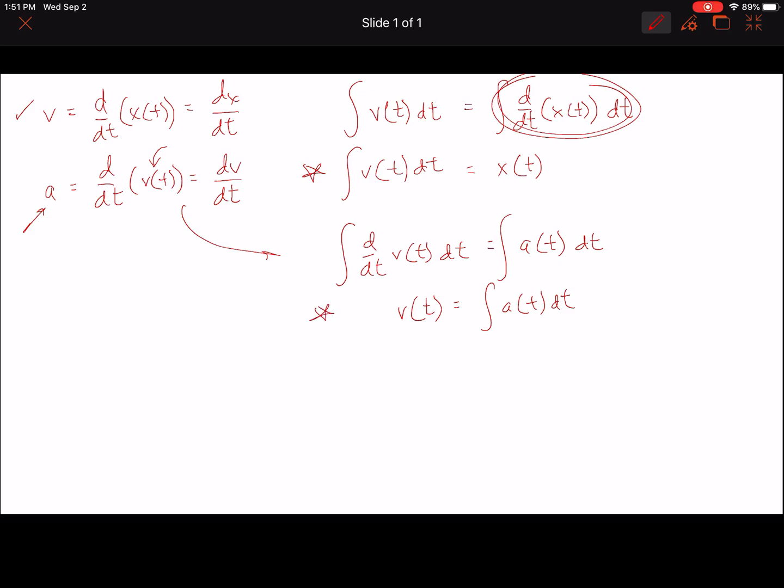So using these two relations, if you know the acceleration of an object as a function of time, well then you can determine what the velocity of that object is as a function of time. And if you know the velocity of an object as a function of time, then you can do another integral and finally find the position of that object as a function of time, if you know enough about the particulars of that object's motion.